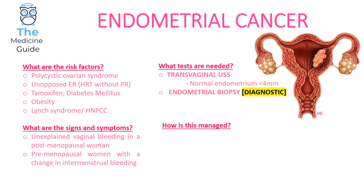In terms of tests, we do a transvaginal ultrasound scan. If the endometrium is less than four millimetres, that's considered normal. However, if the endometrium is greater than four millimetres in thickness — so essentially greater than or equal to five millimetres — that's suspicious and further tests are needed. The definitive test for identifying endometrial cancer is an endometrial biopsy, and it's really important that you remember that.